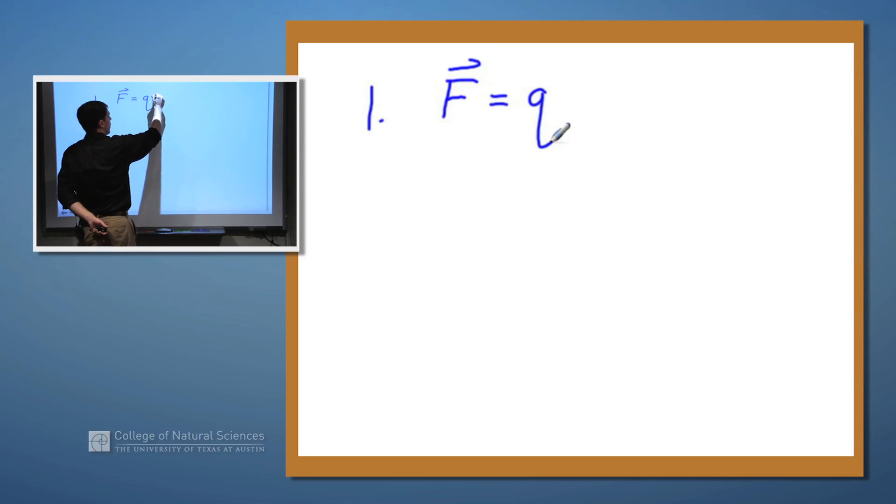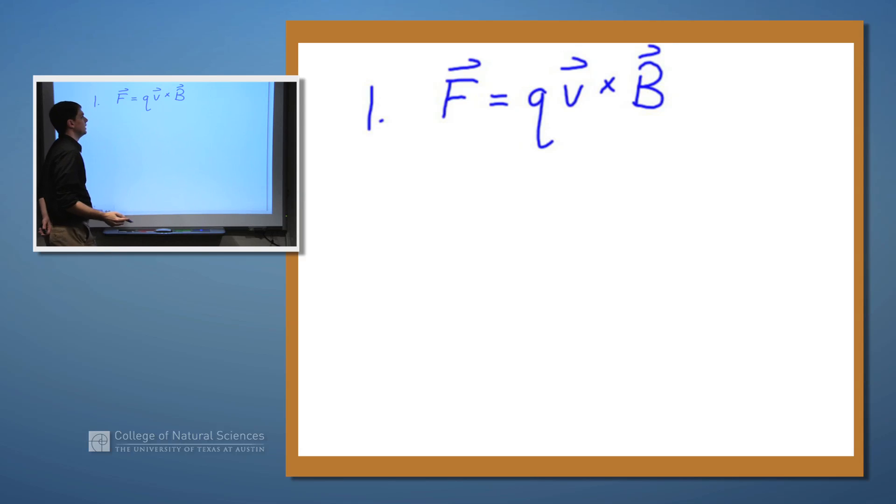First, we're going to look at the Lorentz force. If we have a charged particle with a value of q, moving at a velocity v, inside a magnetic field B, the force applied on that charged particle is proportional to q times the velocity times the magnitude of the field.